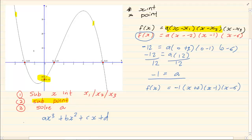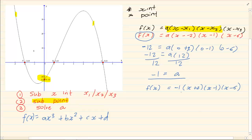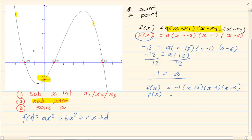If they ask for the equation in the form ax³ + bx² + cx + d, then they are testing your simplifying, which is grade 10 work. You have to get rid of all the brackets using your simplifying. If you are not familiar with this, go over your grade 10 work — it is in the first section where you do the full expansion using FOIL and the rainbow method.